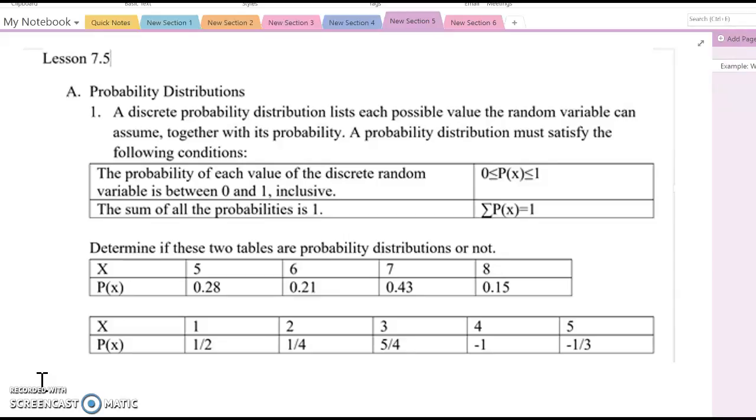A probability distribution must satisfy the following conditions. The first condition is the probability of each value of the discrete random variable is always between 0 and 1, inclusive. So mathematical notation is P(x) is between 0 and 1. The second condition is the sum of all the probabilities is equal to 1. Otherwise, it is not a probability distribution.